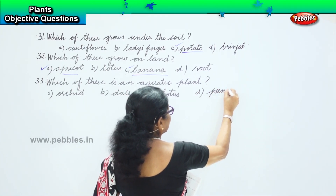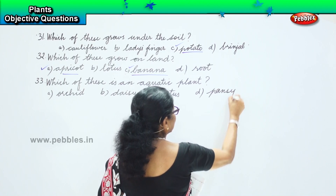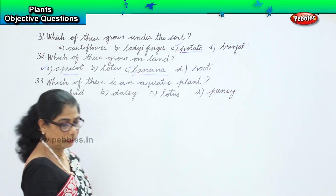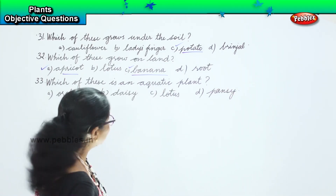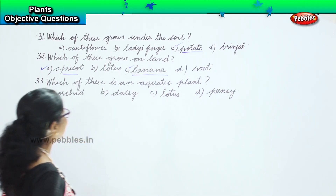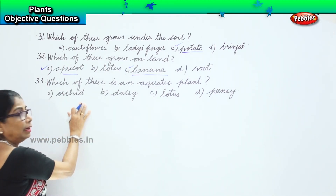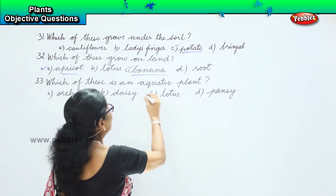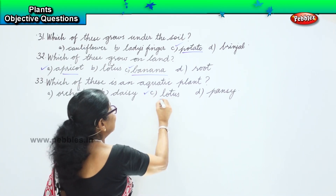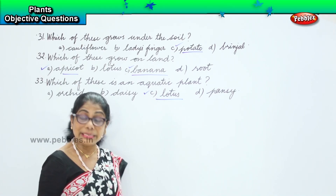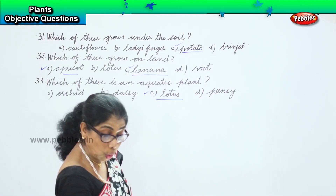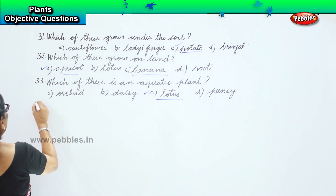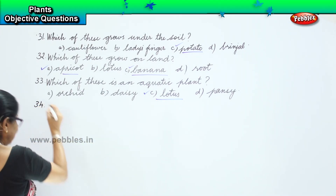They are asking for a water plant. Which of these is an aquatic water plant? Orchid? No. Daisy? Pansy? No. Your answer is Option C — lotus is a water plant, is an aquatic plant.